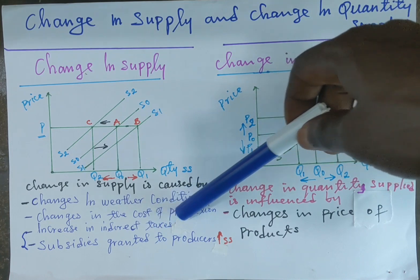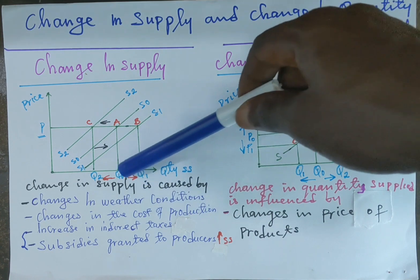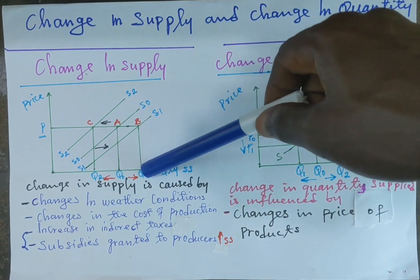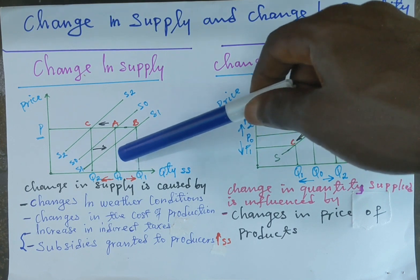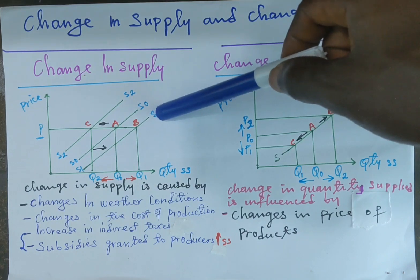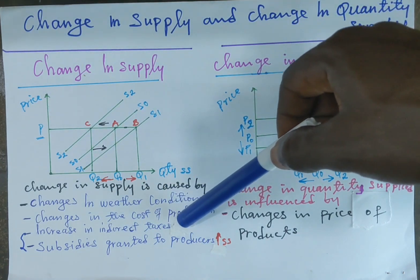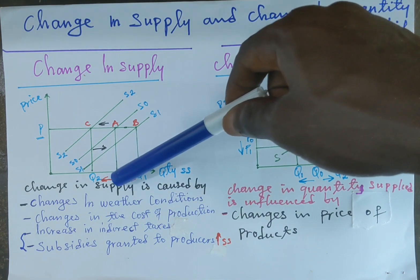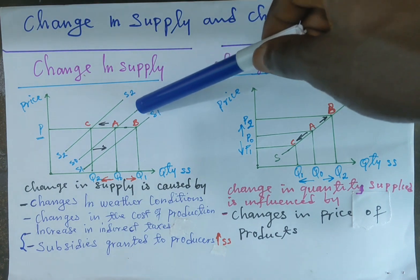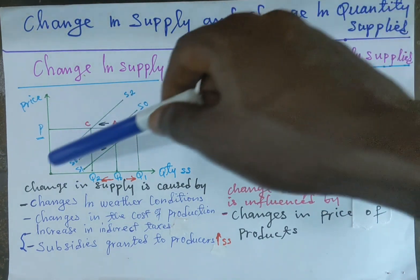Now let's look at changes in the cost of production. A fall in the cost of production will encourage producers to produce more, and the supply will increase from Q0 to Q1, causing the supply curve to move completely from SS0 to SS1. When the cost of production increases, supply will fall from Q0 to Q2, and the supply curve shifts completely from SS0 to SS2.